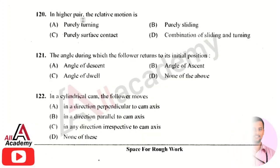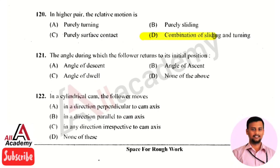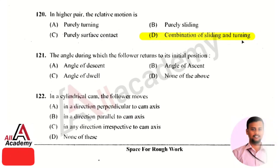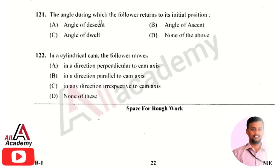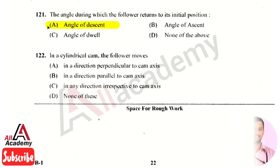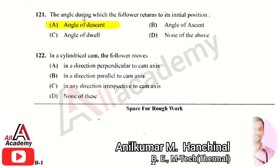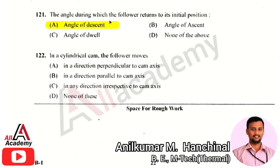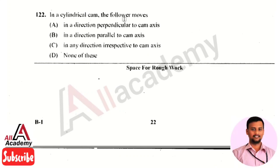In a high pair, the relative motion is a combination of sliding and turning. The angle during which the follower returns to its initial position is called the angle of descent.